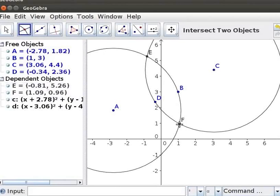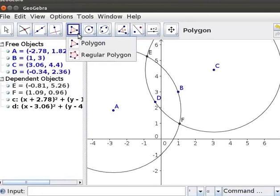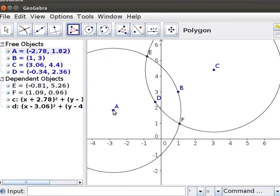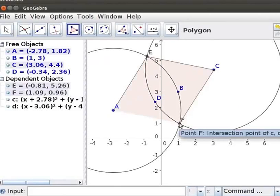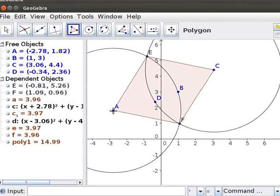Next click Polygon Tool. Click on the Points A, E, C, F and A once again. Here a Quadrilateral is drawn.